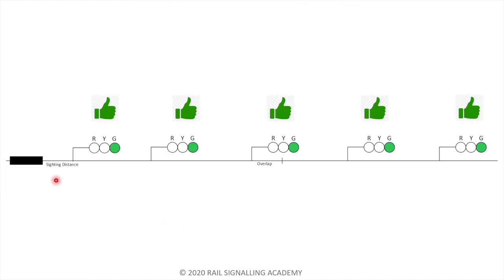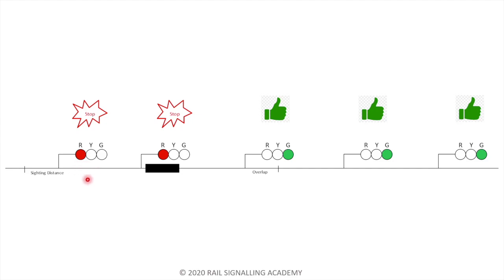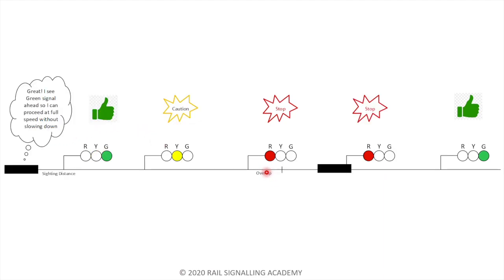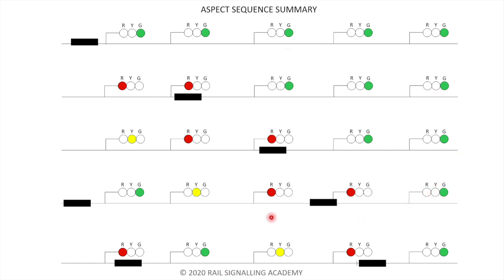In the first scenario, all signals are green — proceed. I've skipped one step since you can now follow the logic. The train arrives, this signal is red, and the next signal is red because the train is still in the overlap. Once the train clears the overlap, this signal can show yellow — caution — meaning you can go but the next signal will be red. The train proceeds, reaches the caution signal, slows down, and stops. After the margin is cleared, it's all safe.